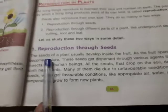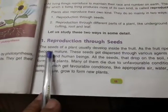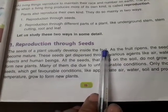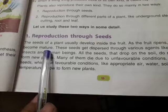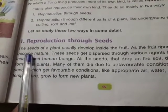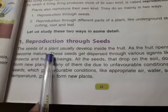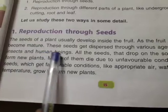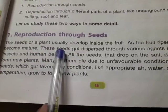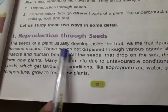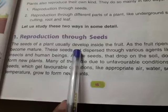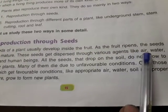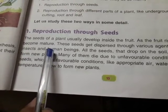Now, in detail, the seed of a plant usually develops inside the fruit. As the fruit ripens, the seeds become mature. These seeds get dispersed through various agents like air, water, insects, animals, and human beings. Dispersed means scattering — the seeds spread out through these agents.